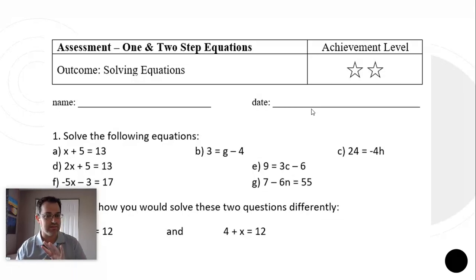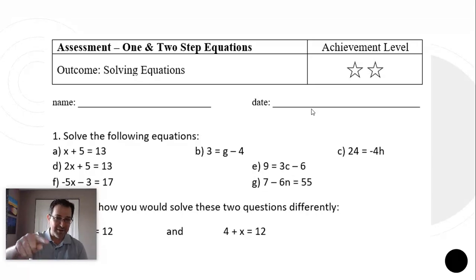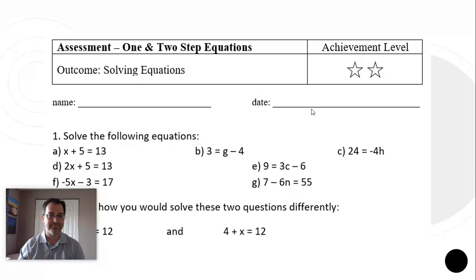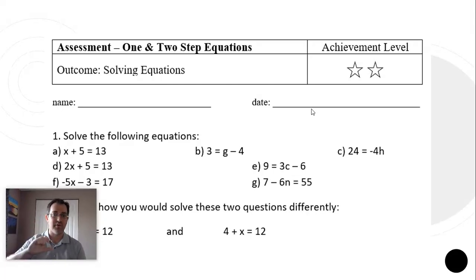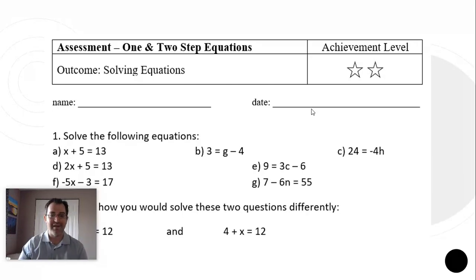Now let's think about the other way. What if a student didn't do well on this assessment — what if they only got the first three questions, which are all one-step equations? They may have gotten almost everything else wrong, but they could still earn level 1. Instead of getting 3 out of 10 and failing, by looking at it holistically we see what they can do and focus on feedback for their next step. They can already solve one-step equations — great. Their next step is two-step equations, with some suggestions like for 2x + 5 = 13, the first step is subtracting 5 from both sides.